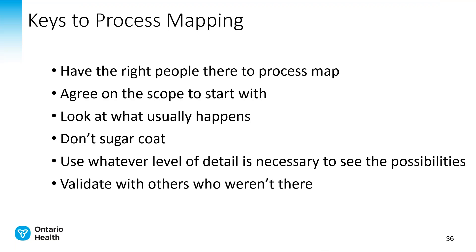The keys to process mapping: have the right people there, agree on the scope — your start point and end point — and look at what usually happens. Don't go down the rabbit hole of one-offs. Don't sugarcoat it; map what is truly happening. Process mapping is about learning what is good and what is not so good. Include whatever detail is necessary to understand what is possible for improvement, and be sure to validate the map by showing it to others who know or have experience with the process but weren't there, to see if it makes sense to them.